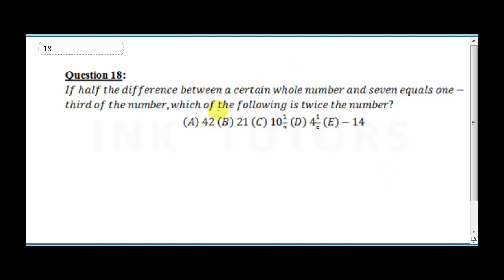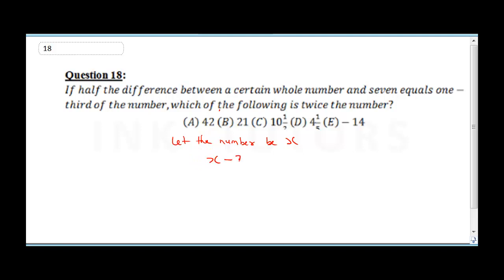It says half the difference between a certain whole number and seven. Let's call the unknown number x. So half the difference of x and seven is written as (x minus 7) over 2, and that equals one third of the number, which is x over 3.